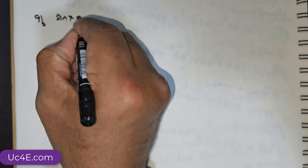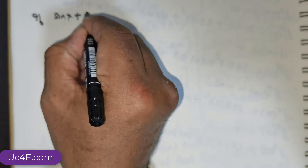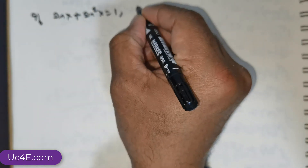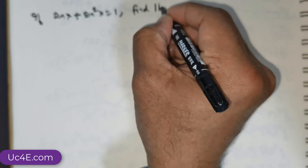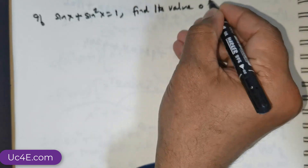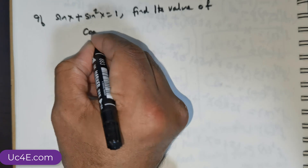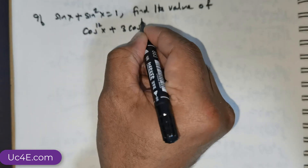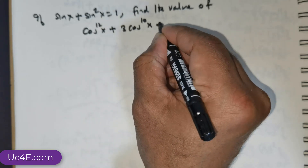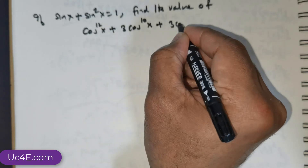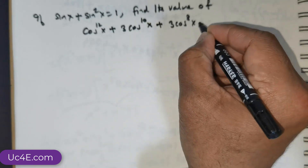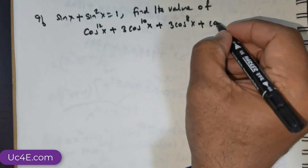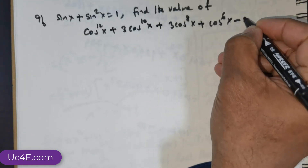If sin x + sin²x is equal to 1, then we are expected to find the value of cos¹²x + 3 times cos¹⁰x + 3 times cos⁸x + cos⁶x − 1.